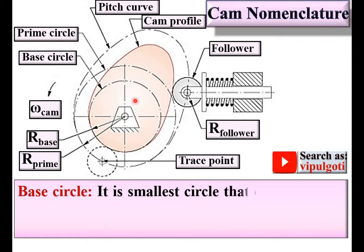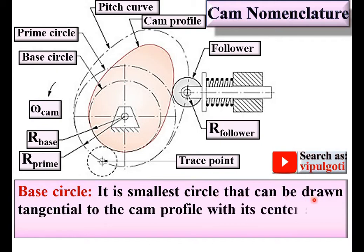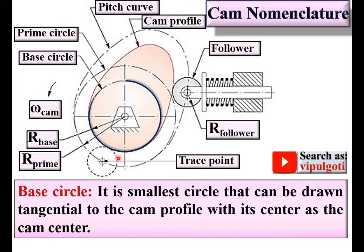First cam nomenclature term: base circle. It is the smallest circle that can be drawn tangential to the cam profile with its center as the cam center. Here you can see the base circle having its center as the cam center and it is tangential to the cam profile.